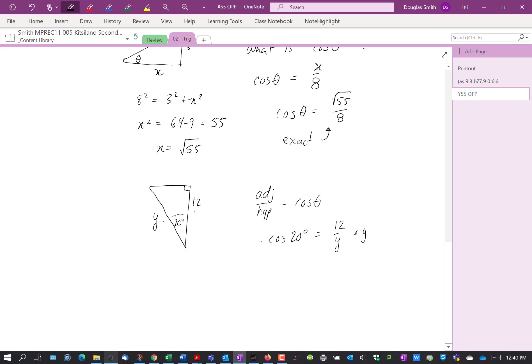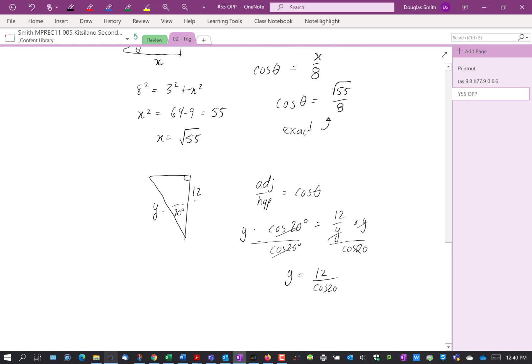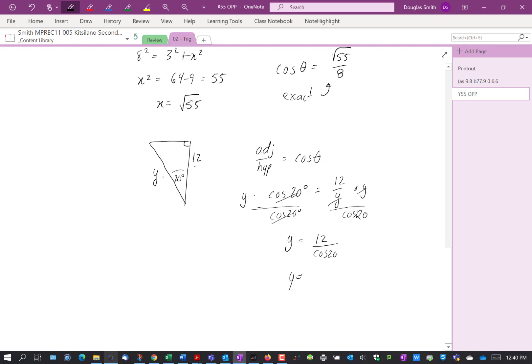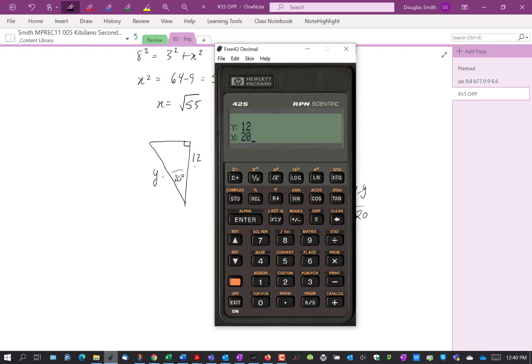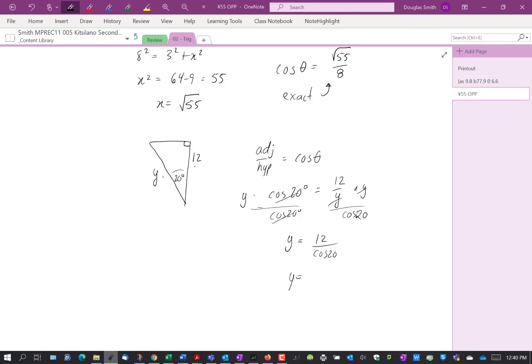So I can multiply both sides by y, and divide both sides by cos 20. So those cancel out, those cancel out. We get y is equal to 12, that should be, sorry that should be 20. 12 divided by cos 20, so y is equal to 12.8. So there you go. There's a bunch of examples of solving basic trig problems.